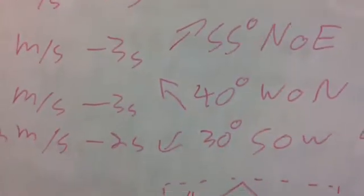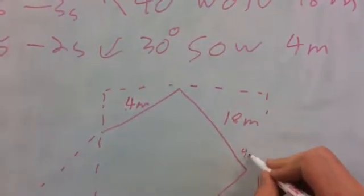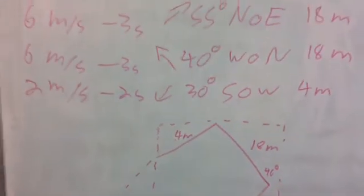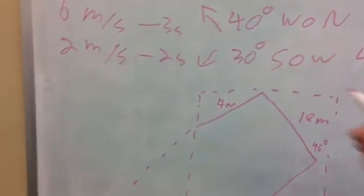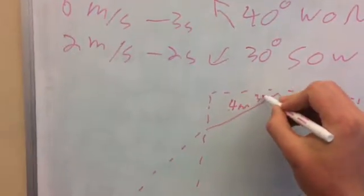Second, he turns 40 degrees west of north, so this angle right here will be 40 degrees. Then he turns 30 degrees south of west, so this angle right here will be 30 degrees.